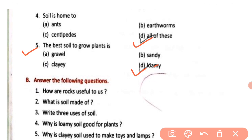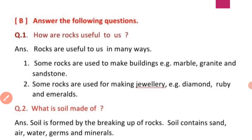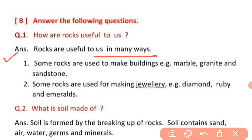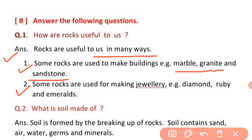Next question: answer the following questions. How are rocks useful to us? Rocks are useful to us in many ways. Some rocks are used to make buildings — that is marble, granite, and sandstone. Some rocks are used for making jewelry — that is diamond, ruby, and emeralds.